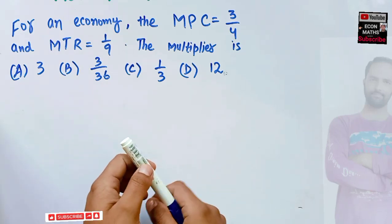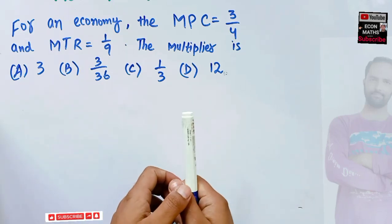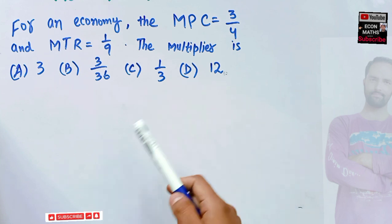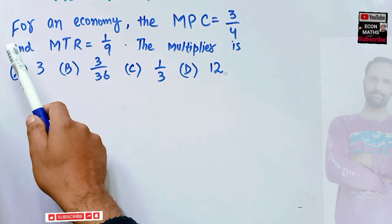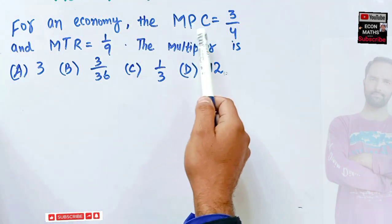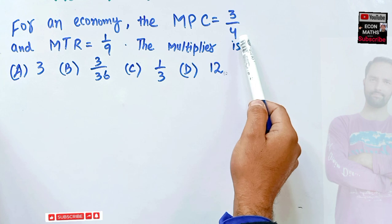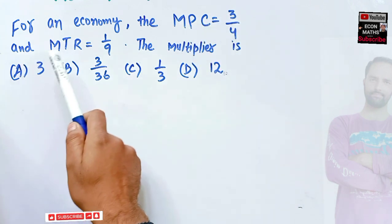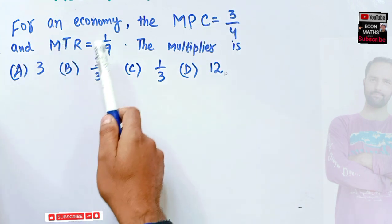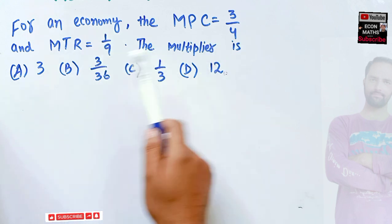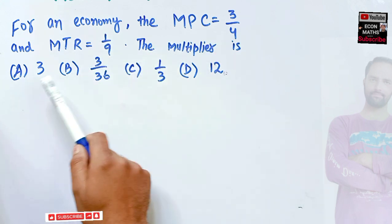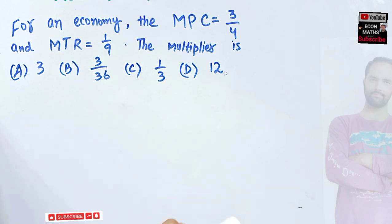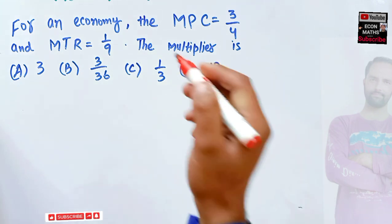In this video we will solve a problem on how to find the multiplier from the given marginal propensity to consume and marginal tax rate. The question is: for an economy, the MPC is 3/4, the marginal tax rate is 1/9. The multiplier for this economy is — options are 3, 3/36, 1/3, or 12.